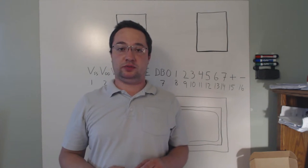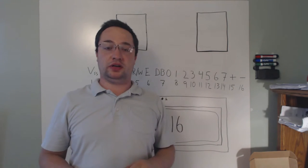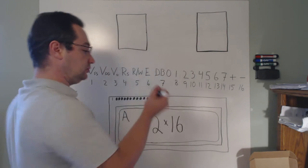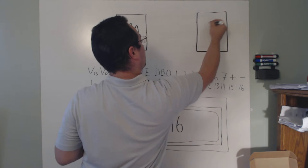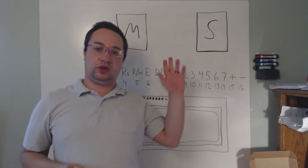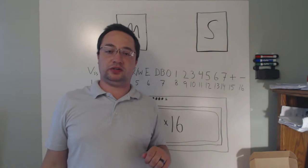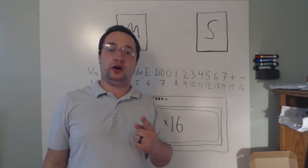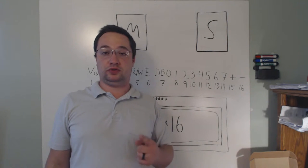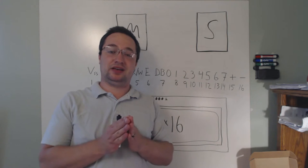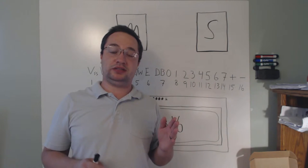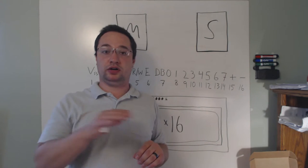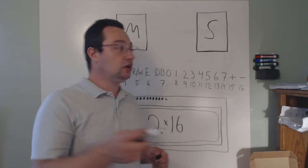Parallel buses are fairly simple. You have two devices you want to connect together, and one always has to be a master and one always has to be a slave. To connect the two devices you need at least one wire per bit of data you want to send. So if your bus is eight bits wide, you need at least eight wires — because you're sending one bit per wire in parallel, and that's where the bus gets its name.